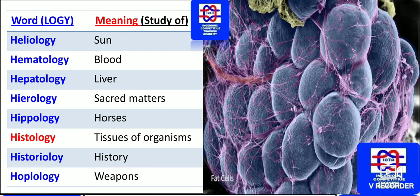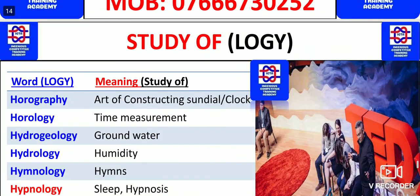As you can see how exactly organisms look, their tissue study is known as histology. Historiology is the study of history. The study concerning the dealing of weapons is known as hoplology.